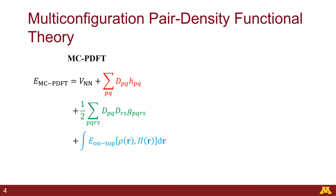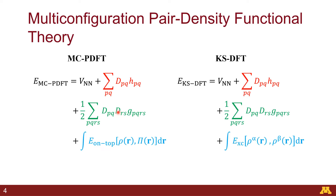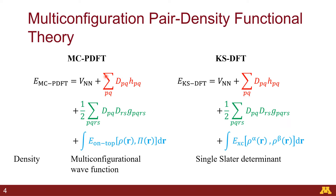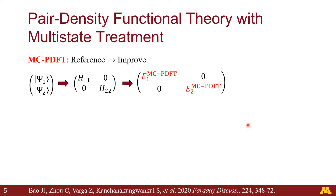We have a method called MC-PDFT. The formula includes the one-electron density, the kinetic energy, the Coulomb energy from the multi-configurational reference wave function, and a last term called the on-top density functional energy, which picks up the missing energies not included in the first three terms. Comparing with Kohn-Sham DFT, the formulas look similar, but the key difference is that in MC-PDFT the density comes from the multi-configurational wave function and is not re-optimized.